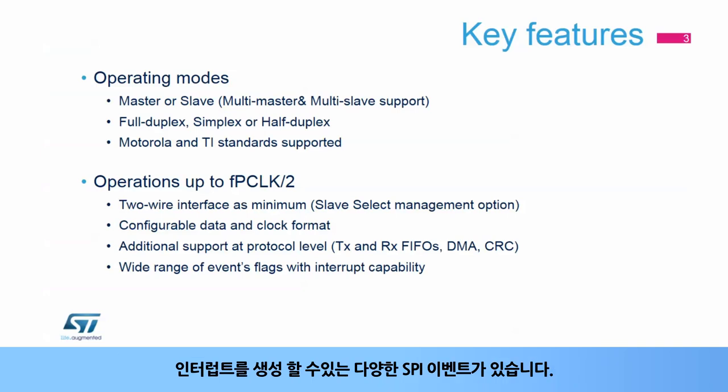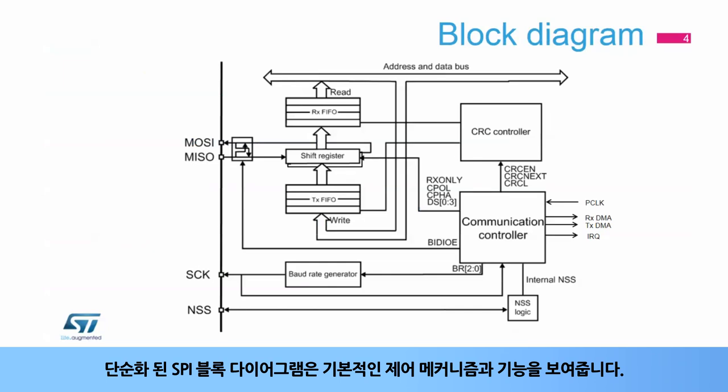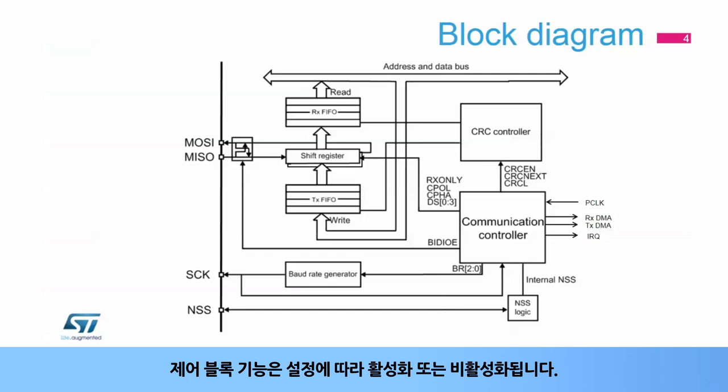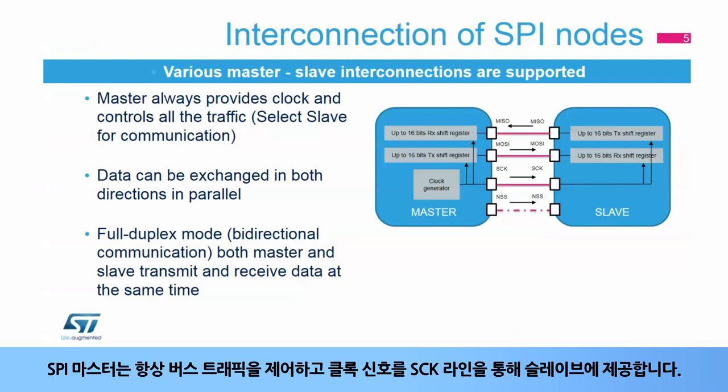There are a wide range of SPI events that can generate interrupt requests. The simplified SPI block diagram shows its basic control mechanisms and functions. There are four I/O signals associated with the SPI peripheral. All of the data passes through receive and transmit buffers via their specific interfaces. The control block features are enabled or disabled depending on the configuration. The SPI master always controls the bus traffic and provides the clock signal to the dedicated slave through the SCK line.